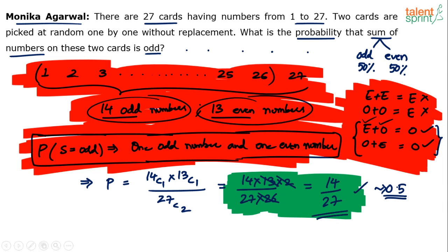If the question asked for probability the sum is even instead of odd, the answer would be close to 0.5 but less than 0.5, because there are fewer even cards. There's a higher chance of choosing odd cards. Anyway, it's not a complex question — 14/27 is the final answer, and it should not take more than 15 seconds in the exam.